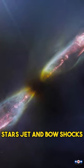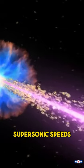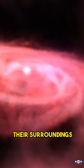This image shows the star's jet and bow shocks, which are streams of gas and dust that the star ejects at supersonic speeds. These outflows are important for understanding how stars form and evolve, and how they shape their surroundings.